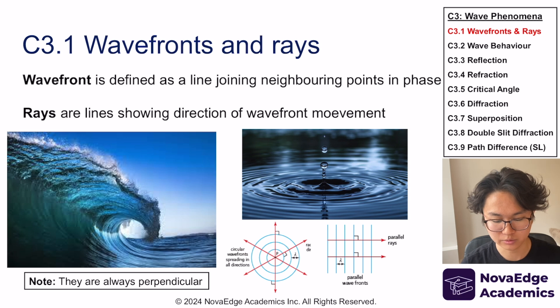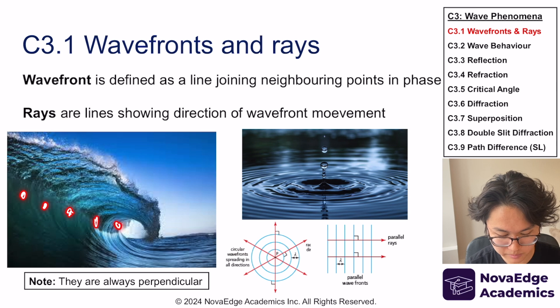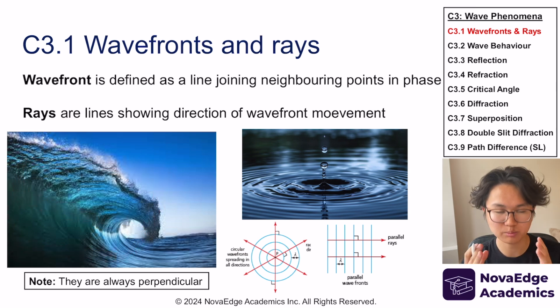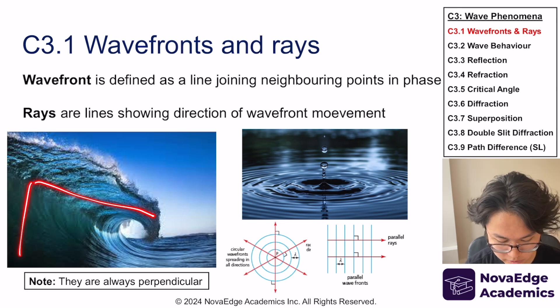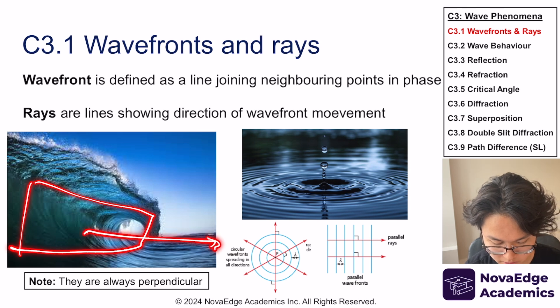They're called wavefront and rays. Wavefront is defined as a line joining neighboring points in phase, so essentially these points. If you align them, it makes a wavefront. Specifically in 3D, it's a wavefront plane. So it's just like the face of the wave coming at you. And rays are just lines showing the direction of where that's going. In this case, this is the wavefront and this is the ray because it's coming at the beachfront.